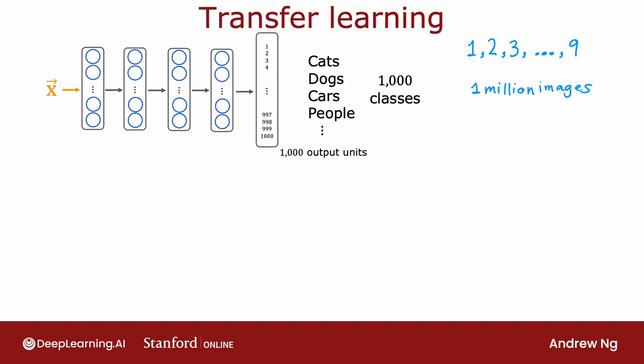In this process, you end up learning parameters for the first layer of the neural network, W1B1, for the second layer, W2B2, and so on, W3B3, W4B4, and W5B5 for the output layer.